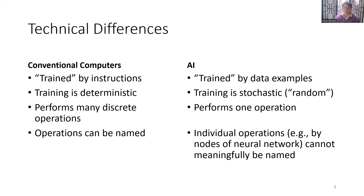In AI, the training is stochastic — it doesn't exactly mean random, but training is basically random. You give it whatever data you have and it learns. Conventional computers, when they execute a program, perform many discrete operations we can name, like 'determining the user' or 'selecting the content.' AI performs just one big operation — it's basically a big mathematical function. The individual operations, for example by nodes of a neural network, cannot meaningfully be named. We don't know what those operations really signify.